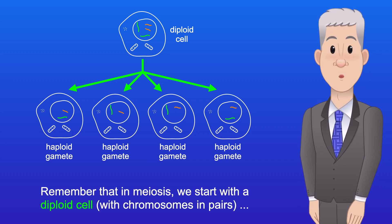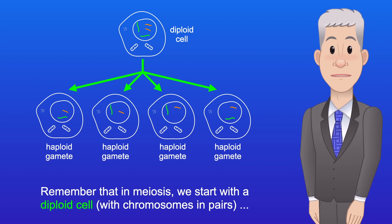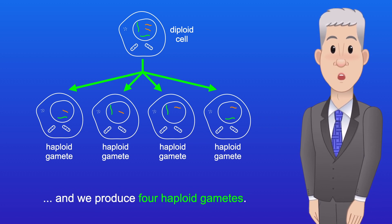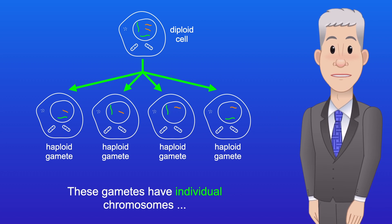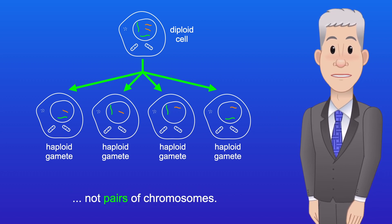Remember that in meiosis, we start with a diploid cell — in other words, with chromosomes in pairs — and we produce four haploid gametes. These gametes have individual chromosomes, not pairs of chromosomes.